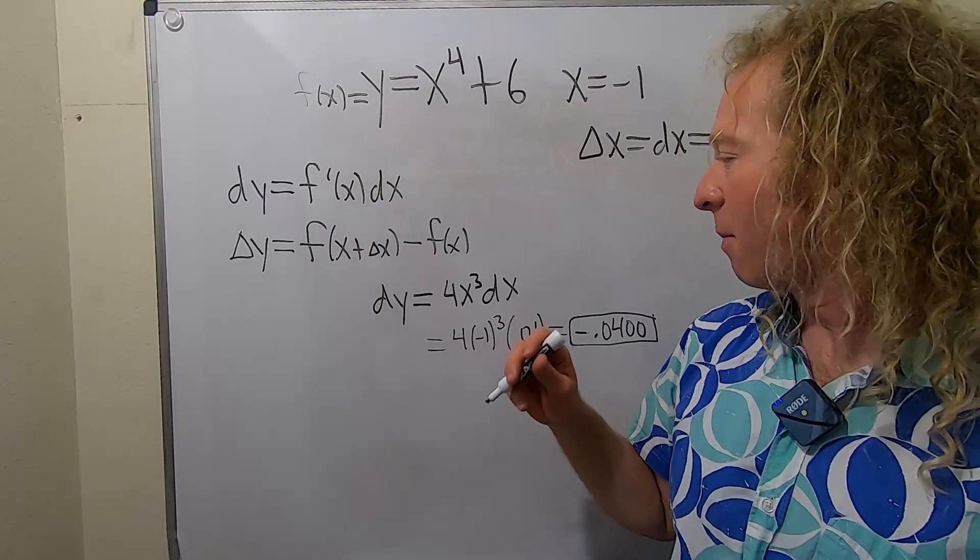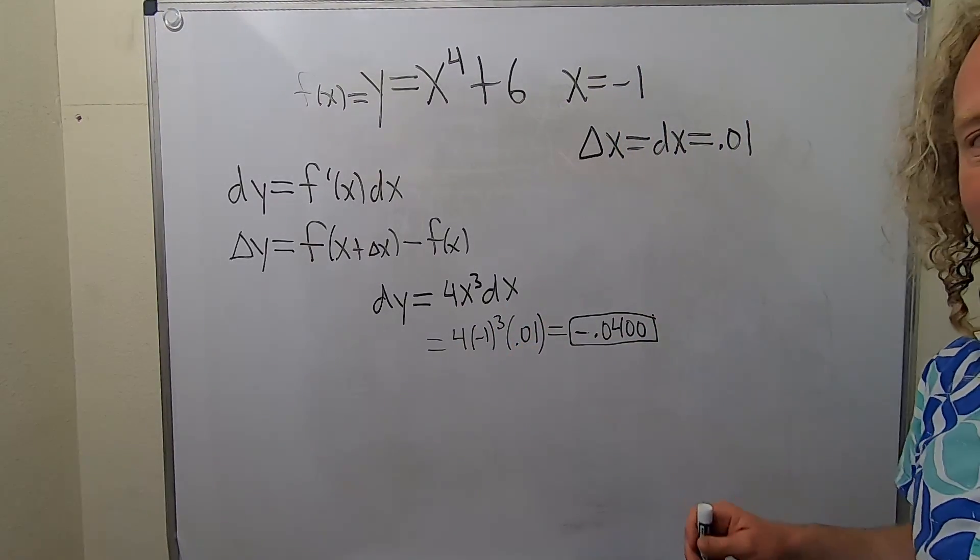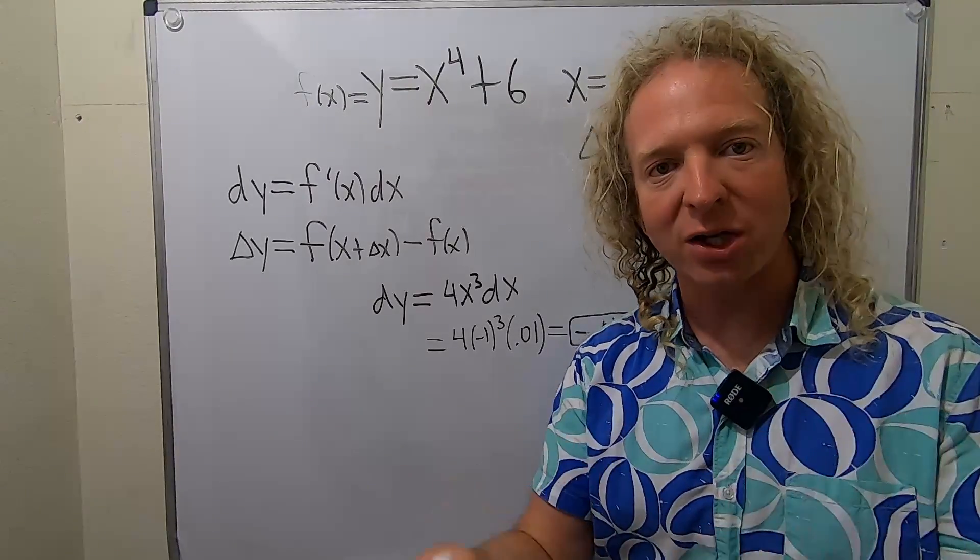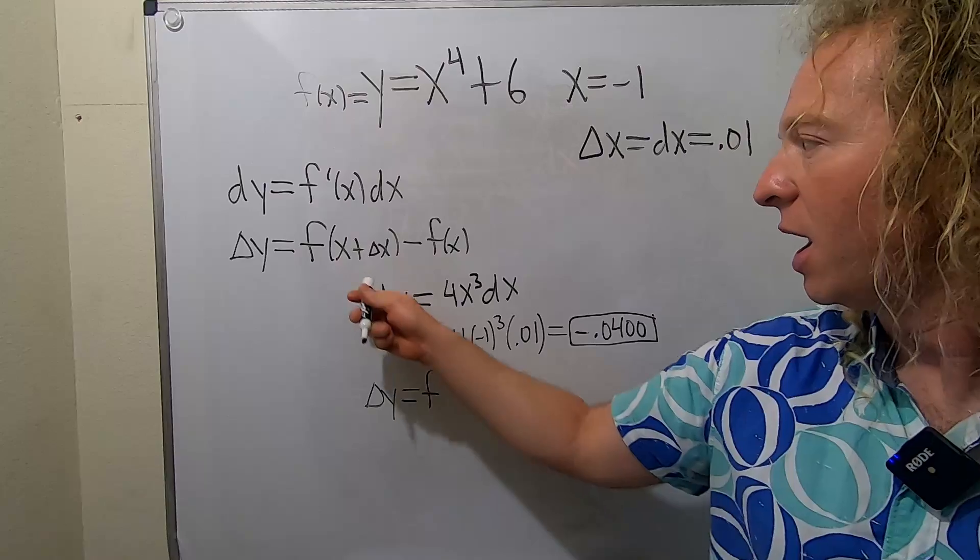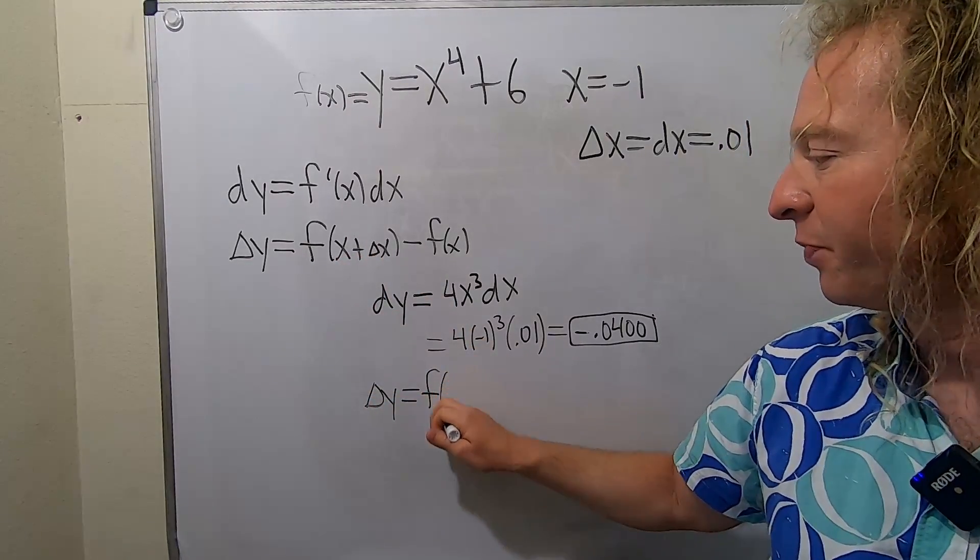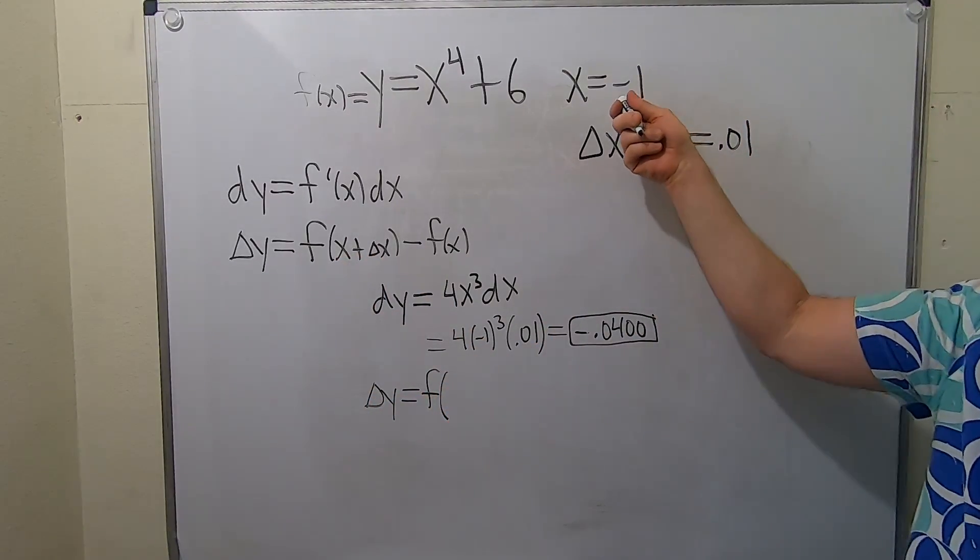That's the approximation to the change in y. Now let's find the actual change in y. Delta y equals f of x plus delta x. Let's plug in the numbers.